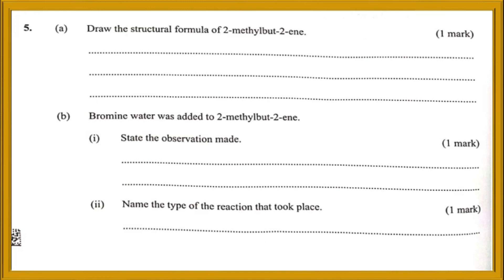The next question: draw the structural formula of 2-methylbut-2-yne. This is a topic of organic chemistry — it is a branched alkyne. When drawing the structure, the first thing is to identify the parent name, which here is but-2-yne. But means 4, so you draw 4 carbon atoms numbered 1 through 4, and show the bonding between them. Because this is an alkyne, where does the triple bond lie?